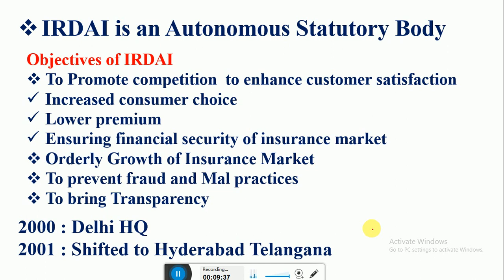IRDAI is an autonomous statutory body. There are two types of bodies: constitutional bodies and statutory bodies. A constitutional body is one where the legislation is passed by both houses and included in the Constitution of India. A statutory body is one where the legislation is passed by both houses but is not included in the Constitution.